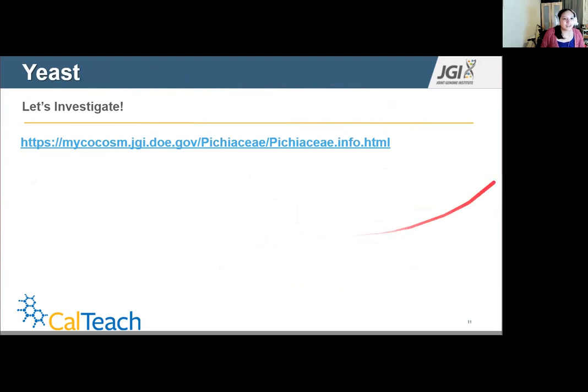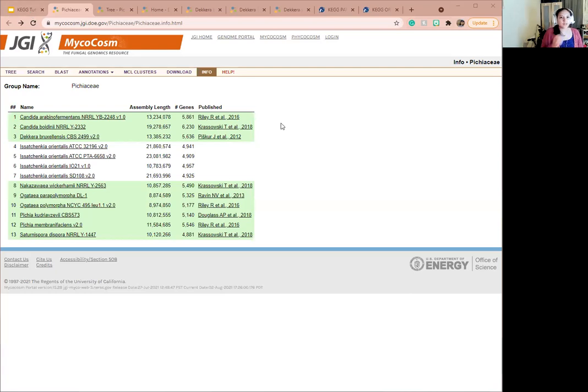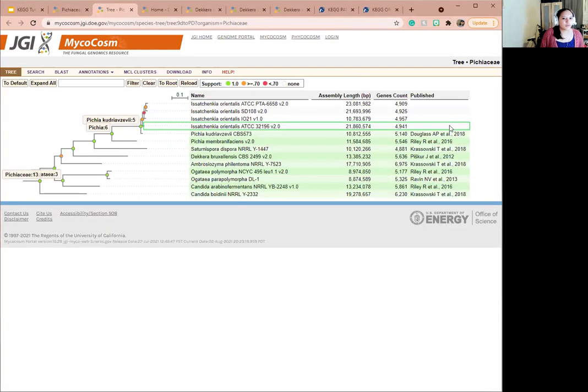And from here we can investigate this using MycoCosm. So once you click on the link that I had on the last slide, you will be taken to the home page for this specific case study. And you will see this list of species that we're only really focusing on two. So don't get overwhelmed. From here, we will click on tree, which gives us a visual representation of the evolutionary relationships between the yeast. The tree enables us to conduct comparisons and understand the relationships between these species. And that kind of goes for every part of the tree, not just for yeast.